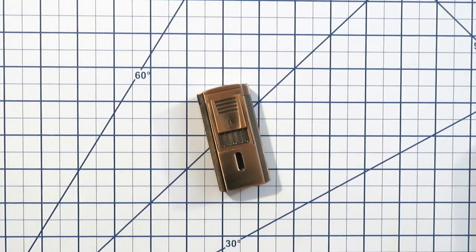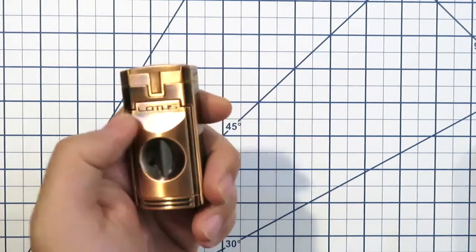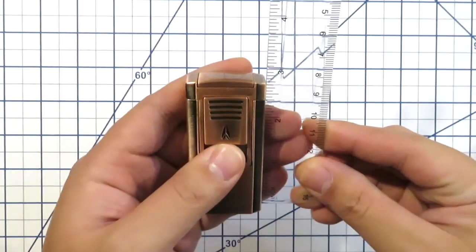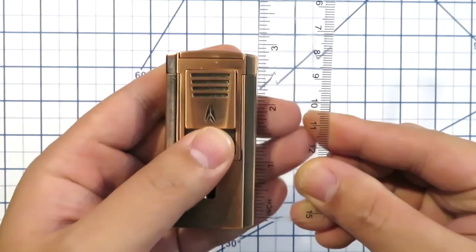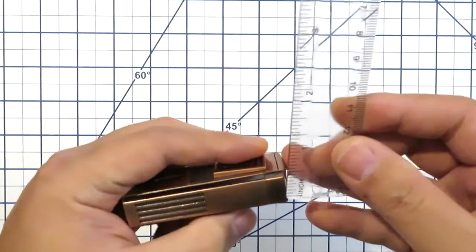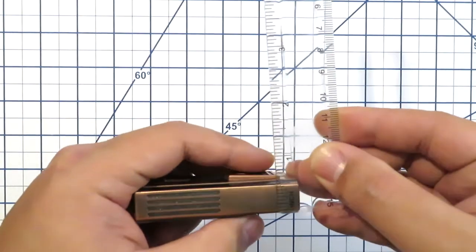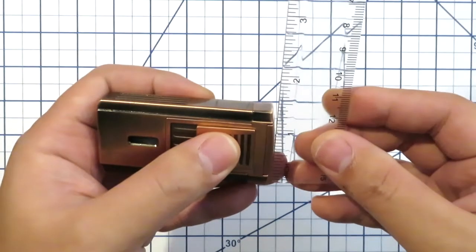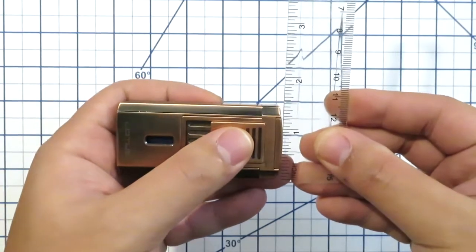So let's start with some specs here. The lighter itself is about two and three quarters inches long, about half an inch wide or thick, and about an inch and a half wide here.